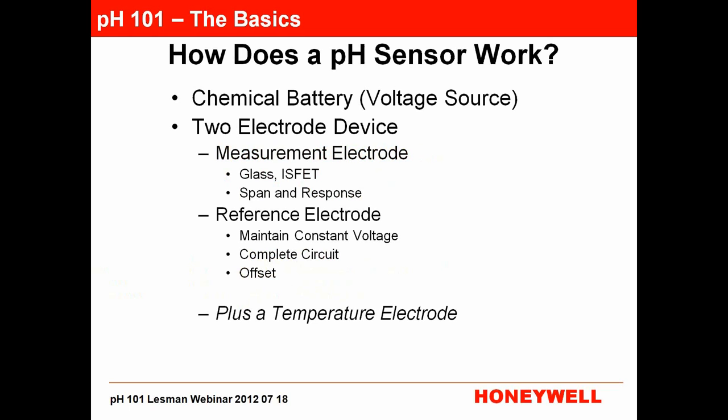Let's talk about how a pH sensor works. A pH sensor is basically a little chemical battery — it's a two-electrode device. You have a measuring electrode and a reference electrode. The measuring electrode is going to be glass — pH-sensitive glass — or it's going to be an ISFET (ion-sensitive field-effect transistor), which is a newer sort of device. The measuring electrode is responsible for the span and response. If a sensor put in a 4-buffer and 7-buffer measures 4.5 and 6.5, that's a short span or low efficiency, and that's related to the glass.